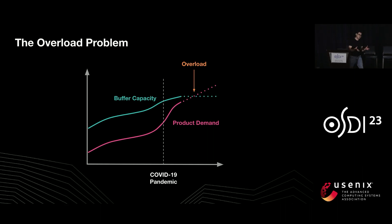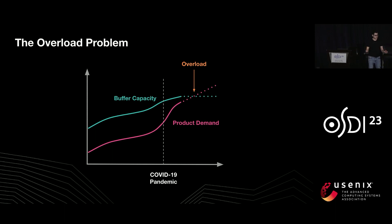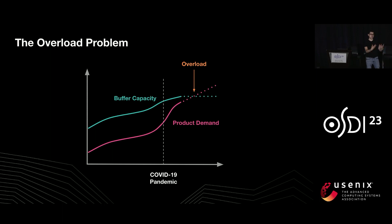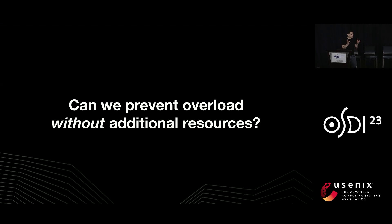In distributed systems, when the demand for resources exceeds the supply, you enter into an overload spiral where machines start to exhibit fail slow behavior — they're not able to respond to requests — and load balancers attempt to shift the load to other data centers, only to cause those data centers to start failing as well. So we asked ourselves: can we prevent this overload behavior without adding additional resources?